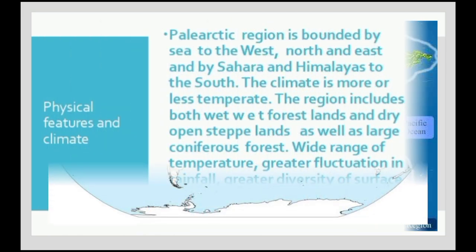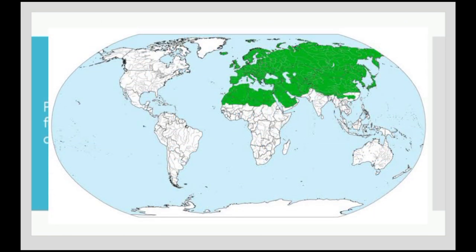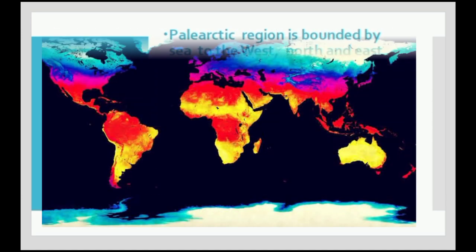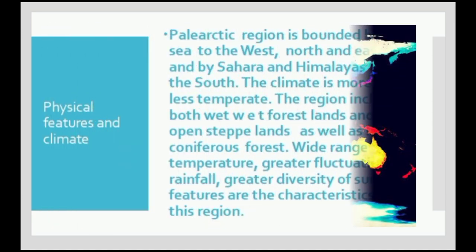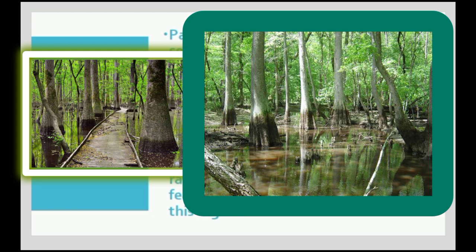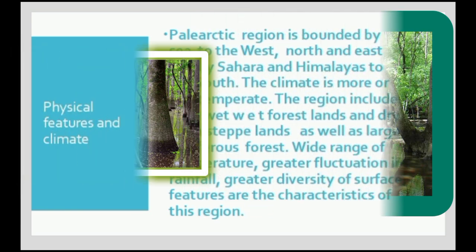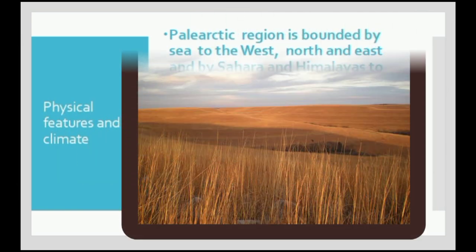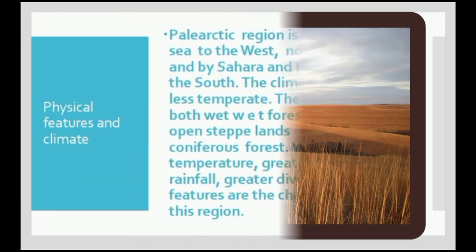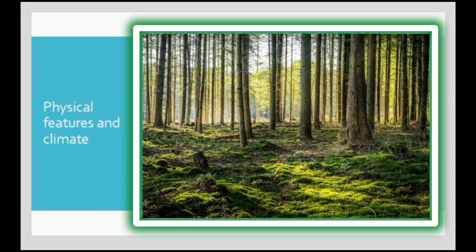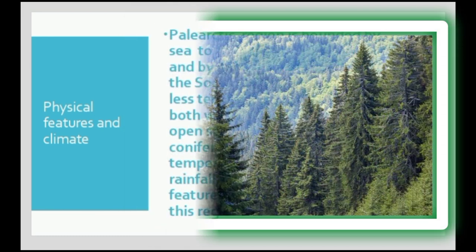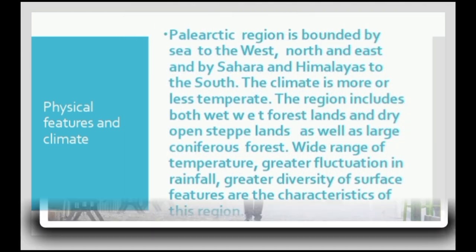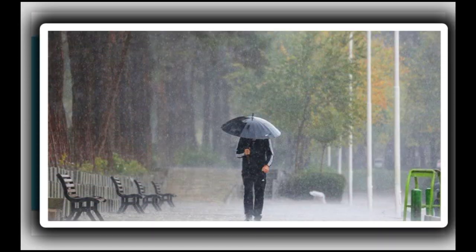The Palaearctic region is bounded by sea to the west, north, and east, and by the Sahara and Himalayas to the south. The climate is more or less temperate. The region includes both wet forest lands and dry open steppe land, as well as large coniferous forests. Wide range of temperature and greater fluctuation in rainfall are characteristic features.